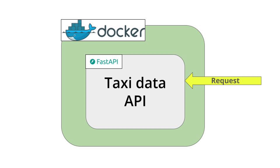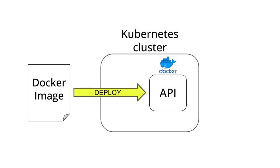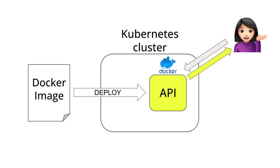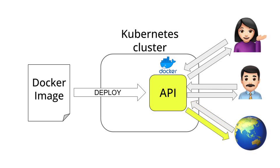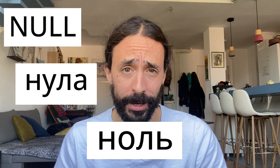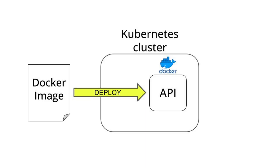The thing is, this API works like a charm on localhost, but until you deploy it to a production environment where your clients, your colleagues, or even the whole world can use it, your real-world impact is zero.